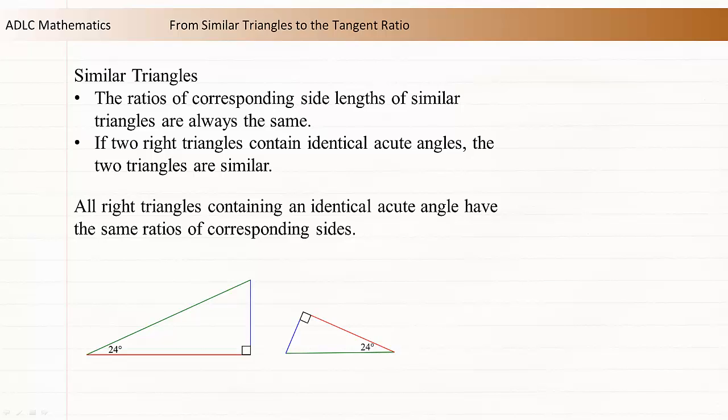So for our right triangles with 24 degree angles, the length of the blue side divided by the length of the green side gives the same value for both triangles, and the length of the red side divided by the length of the green side gives the same value for both triangles, and so on.